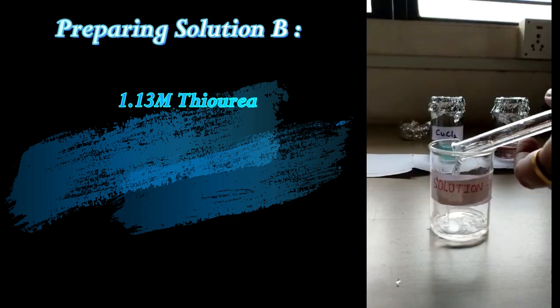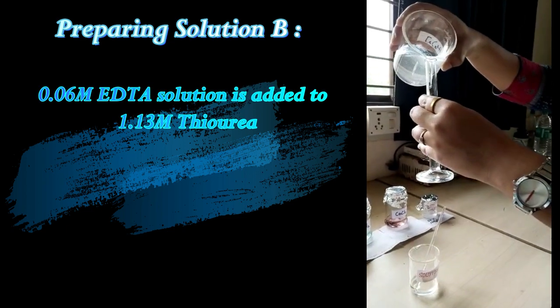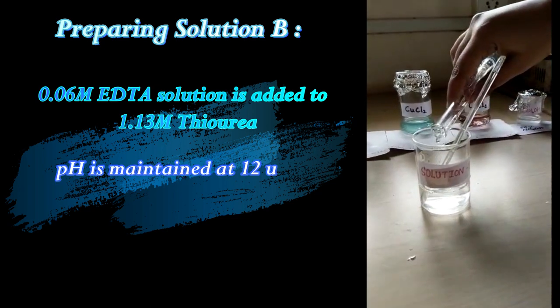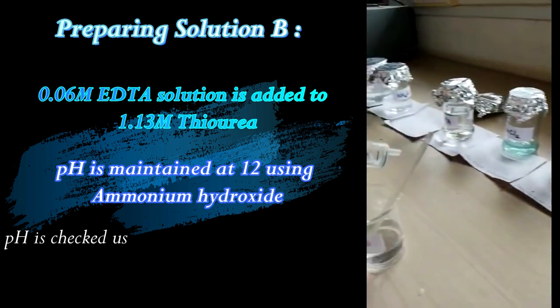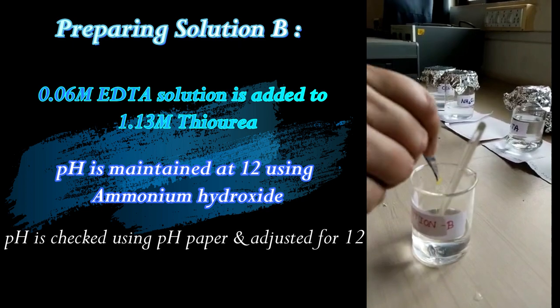To solution B, EDTA is added which is going to act as a complexing agent. This slows down the process and helps in uniform deposition of thin film. Here again, using ammonium hydroxide, pH is maintained to 12, which can be checked using pH paper.